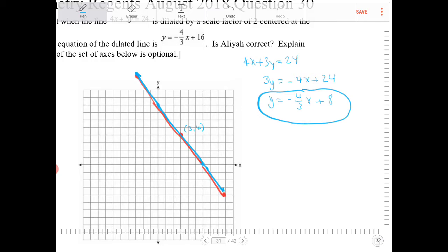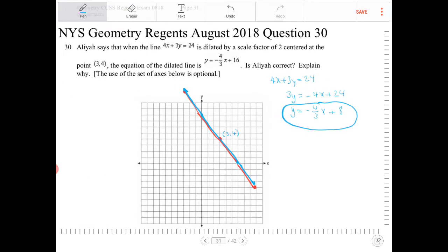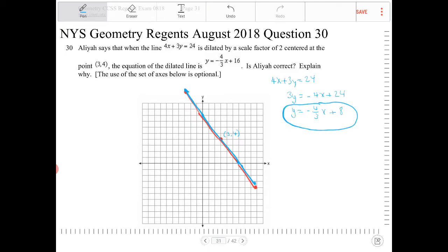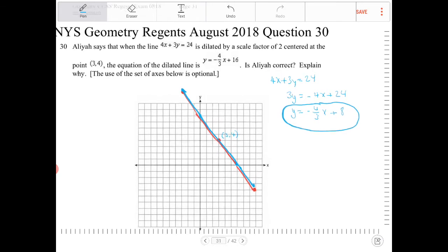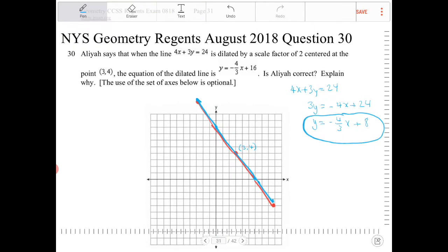So again, this question, we're not dilating a line segment. We're dilating the actual line, which extends forever. And because the point of dilation is on the line itself, it will appear as if nothing's changed. So the actual equation after a dilation of 2 is the original, and so Aliyah is incorrect.